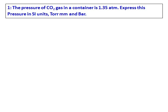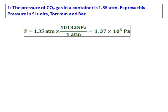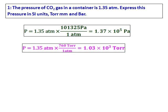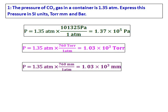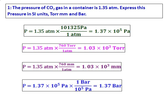First question: the pressure of carbon dioxide gas in a container is 1.35 atmosphere — express this pressure in SI units, Torr, millimeter, and bar. This is a simple unit conversion: I've converted atmosphere into Pascal, then into Torr, then into millimeters, and then into bar. Note that Torr and mmHg are essentially the same unit.